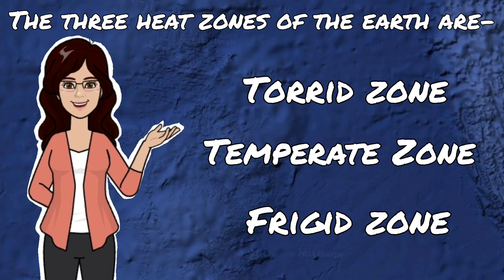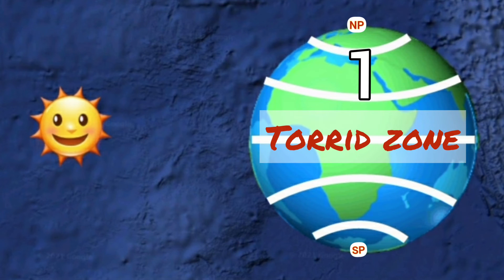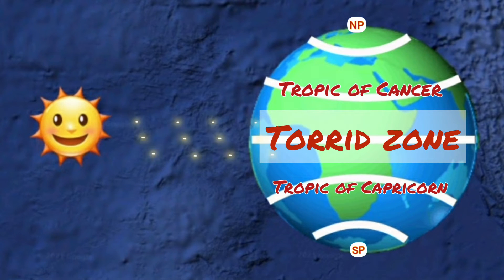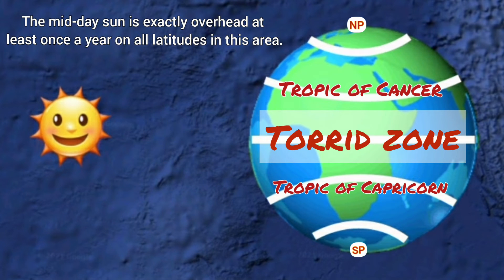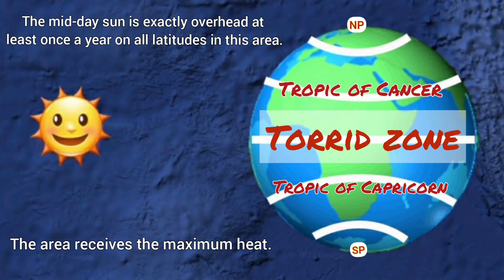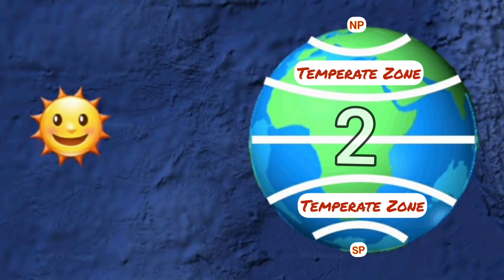The first one is the Torrid Zone. All places located between the Tropic of Cancer and the Tropic of Capricorn experience the vertical rays of the sun, meaning the midday sun is exactly overhead at least once a year on all latitudes in this area. Therefore, this area receives the maximum heat and is called the Torrid Zone.